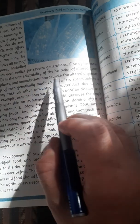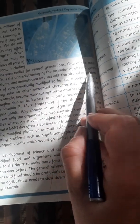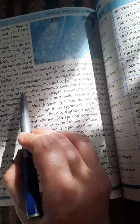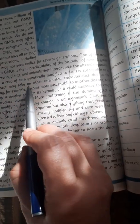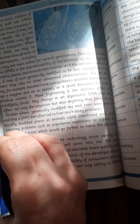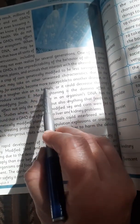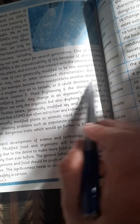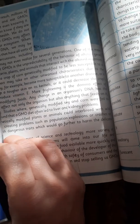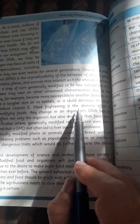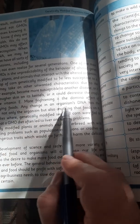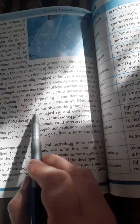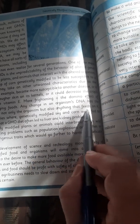One of the main concerns about GMOs is the unpredictability of the behavior of altered genes and of the bacteria, plants, and animals that interact with the altered organism. For example, a crop of corn genetically modified to be less susceptible to a particular insect may take on another unwanted characteristic due to the change. It may become more susceptible to another disease, or it could develop a tougher skin on its kernels, or it could decrease the crop's ability to produce vitamin E. More frightening is the domino effect of genetically modified foods.